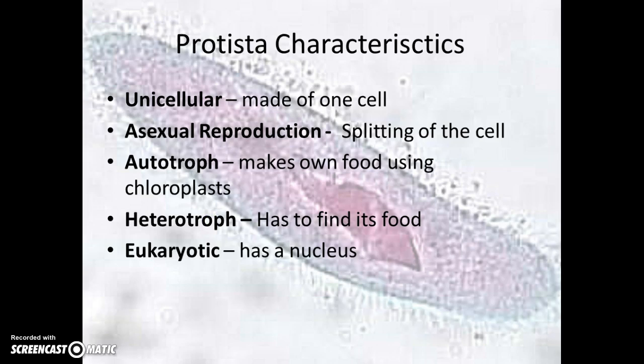The next kingdom is the protista kingdom. To be a protist, an organism must be unicellular — made of only one cell — so you can't see it with the unaided eye; you need a microscope. All protists reproduce asexually, meaning there is no sperm and egg; instead the cell splits to create two new cells.